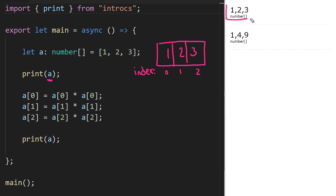That's what caused 1, 2, 3 to print out. What we're doing in this program is squaring each of these numbers. We start by interpreting this line: we have an assignment statement. We're saying take the value of array at index 0 — that's 1 — so we substitute 1 here and 1 here.